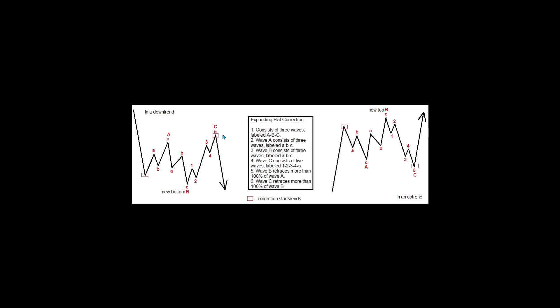Sometimes wave B, instead of being a simple three, takes the form of a triangle. This makes the whole pattern a lot more confusing, even for the experienced analyst. It does not happen very often, but you should be prepared for it.